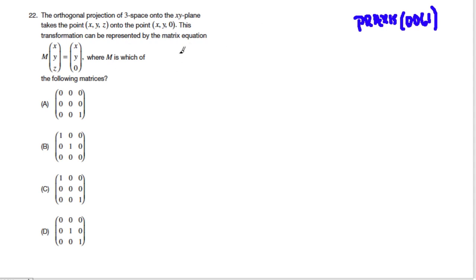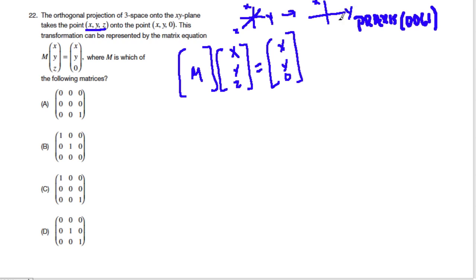So then we take our matrix M and multiply it by xyz, do we get xy0? And what they're saying makes sense, right? A 3D plane has an x, a y, and a z. So if we want to map this to a 2D plane, we can get rid of any dimension, but we can get rid of z, and then we're left with xy. So which matrix does this?